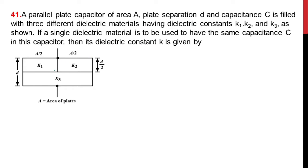Looking at the diagram, the single capacitor — two parallel plates — is filled with different dielectric constants, and it will act as different capacitors. This one can be said as capacitance C1 because it is filled with dielectric constant K1. Similarly, there is another capacitance C2 and another capacitance C3.